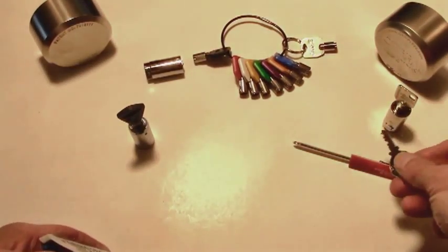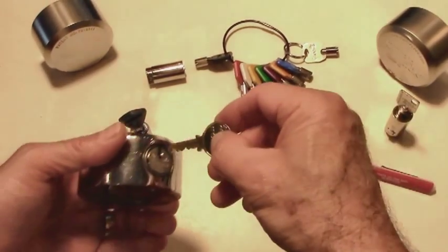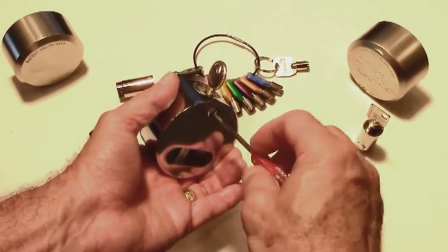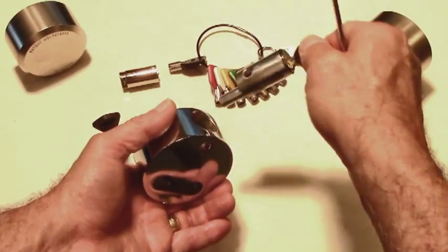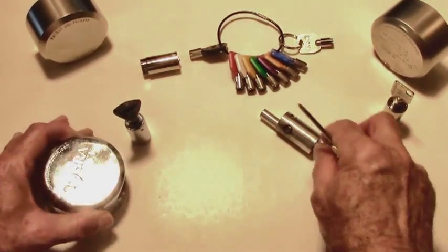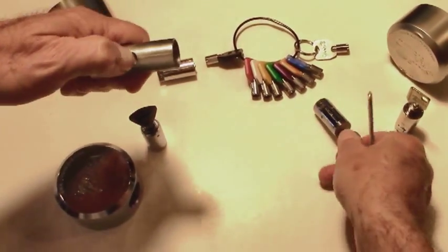Now we're going to change the Medeco lock cylinder. Again, loosen the set screw and remove the cylinder and the Universal Sleeve. Push down on the lock bolt, remove the lock.